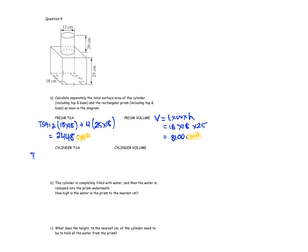Total surface area of a cylinder including top and bottom is 2πr² plus 2πrh. Plugging all the values in you should get 980.18 square centimeters. Volume of a cylinder is πr² times h, which gives 2,261.95 cubic centimeters.